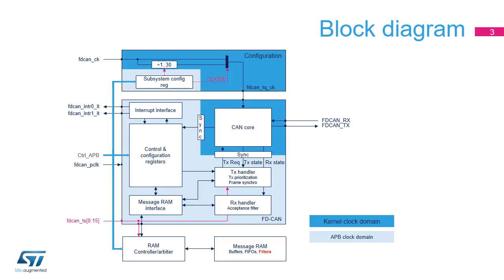The FDCAN controller supports both the basic extended CAN protocols version 2.0 A and B with a maximum bitrate of 1 Mbps, as well as the CAN-FD protocol version 1.0 with up to 64 data bytes and a data bitrate of up to 8 Mbps. The CAN-Core contains the protocol controller and receive/transmit shift registers. It handles all ISO 11898-1 2015 protocol functions and supports both 11-bit and 29-bit identifiers. The TX-handler controls the message transfer from the message RAM to the CAN-Core, while the RX-handler controls the transfer of received messages from the CAN-Core to the external message RAM. Two clock domains are implemented: the APB bus interface and the CAN-Core kernel clock, and synchronization blocks are required between these two domains.